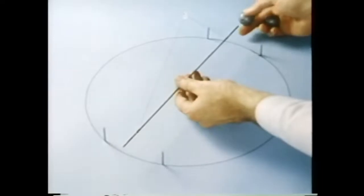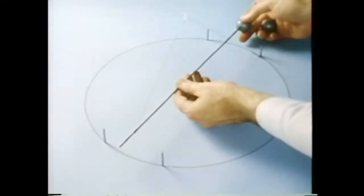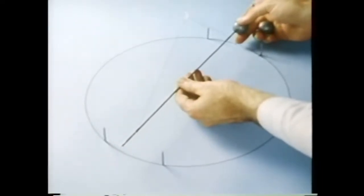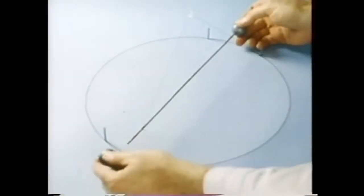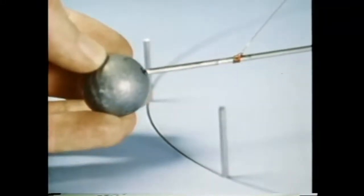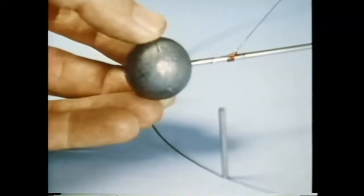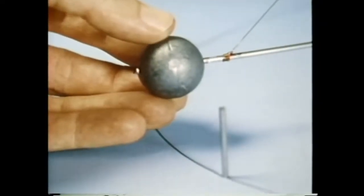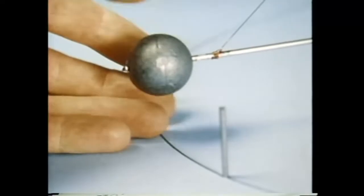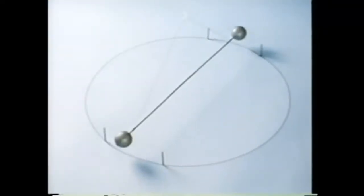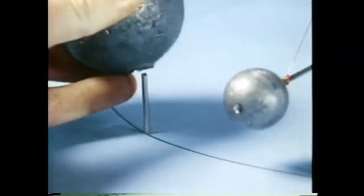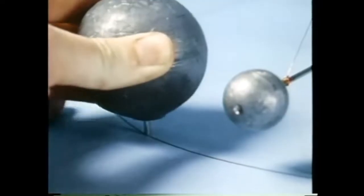On each end of the bar we put a lead ball. The two balls balance and the bar is free to turn. Now we put another ball on the left side